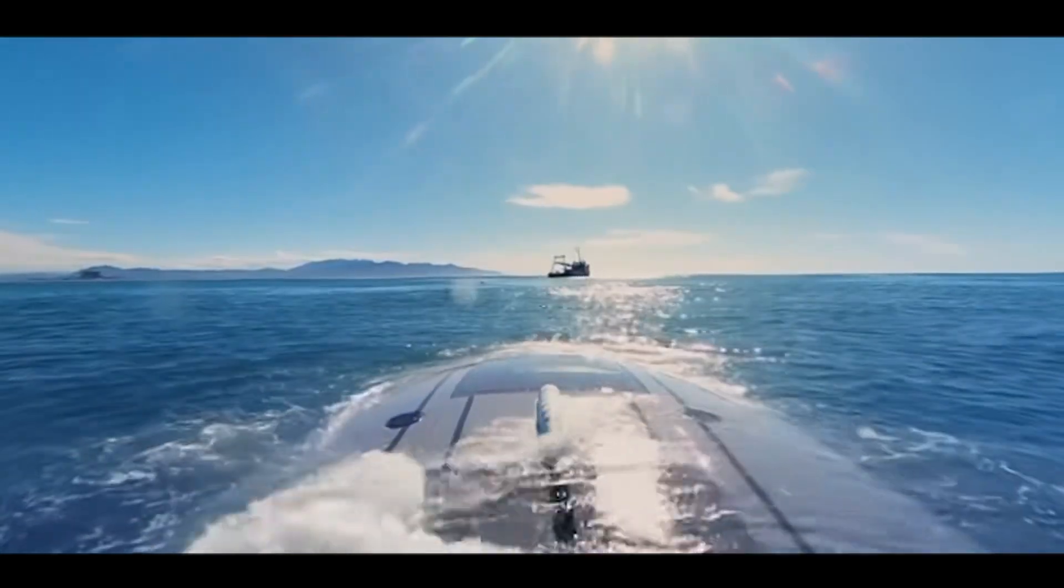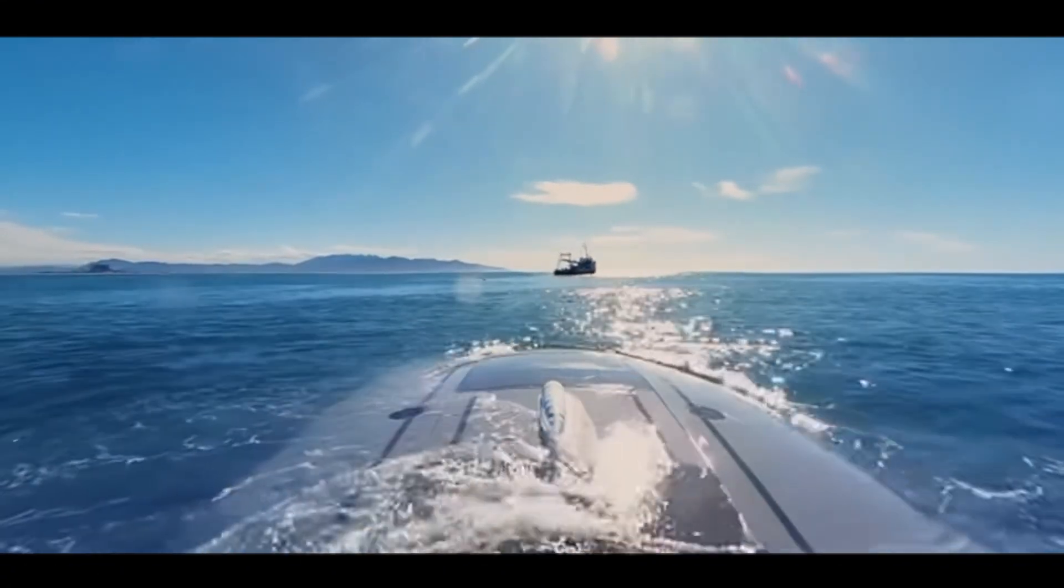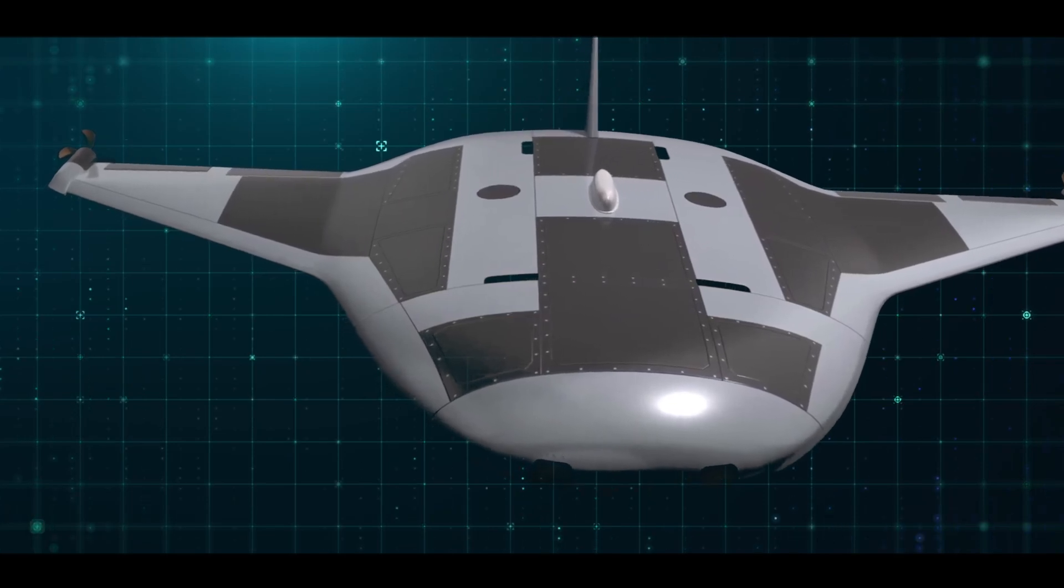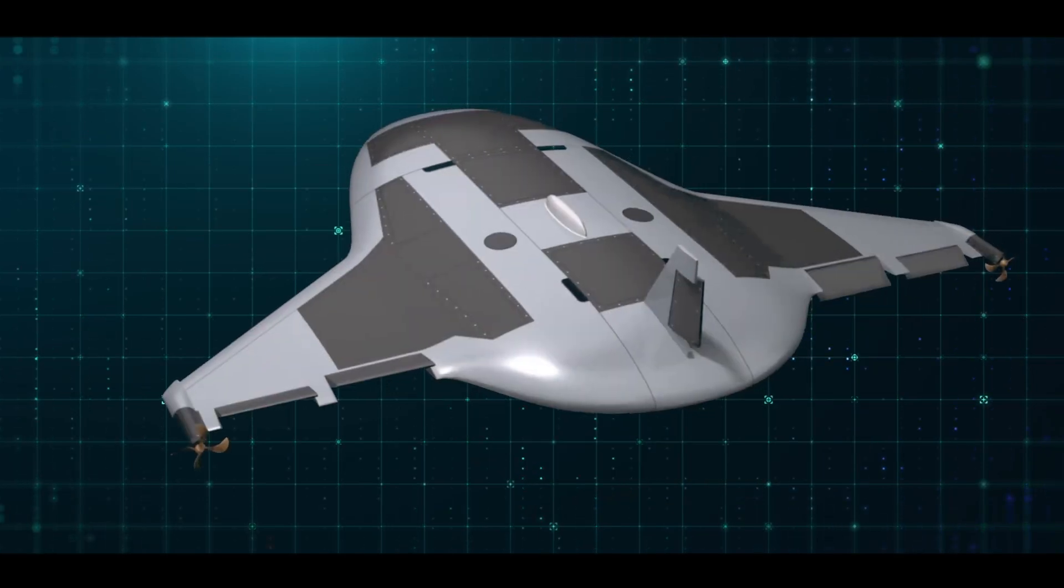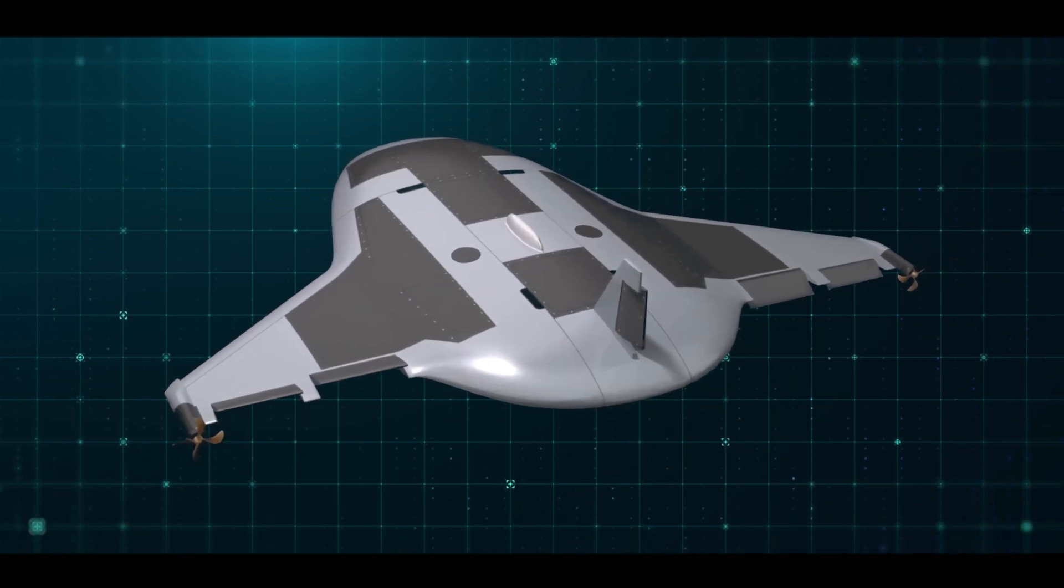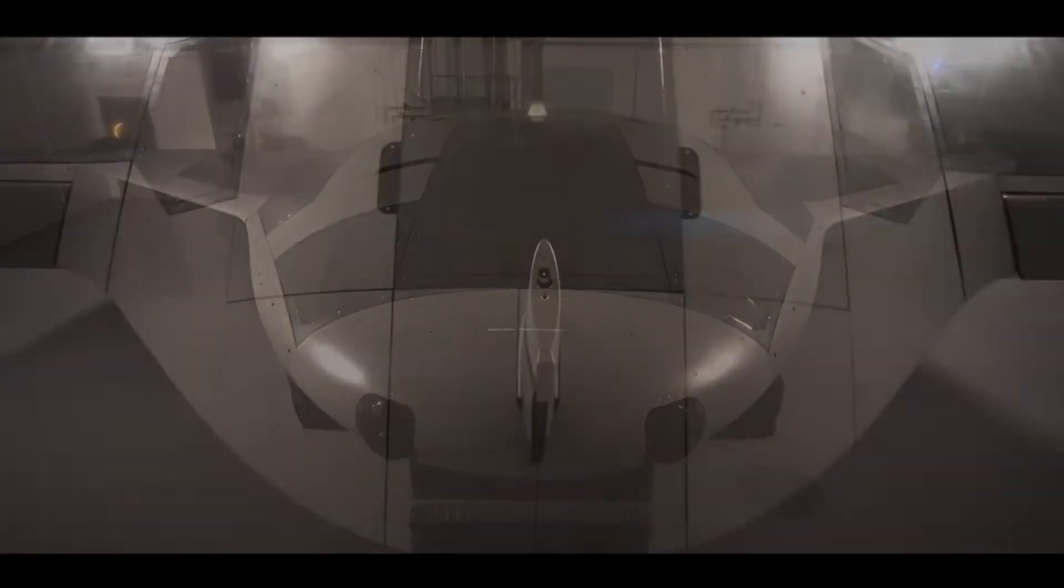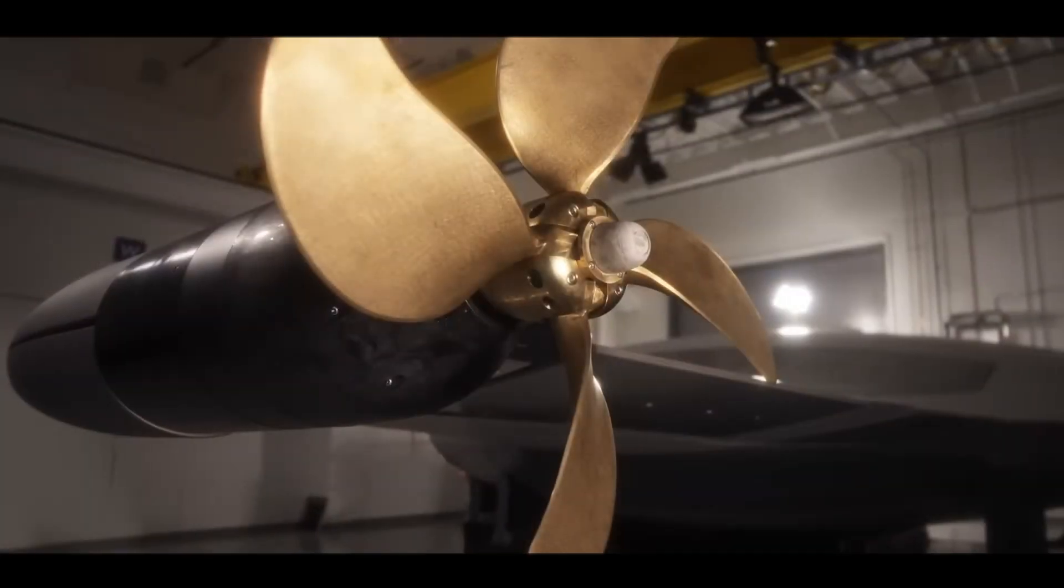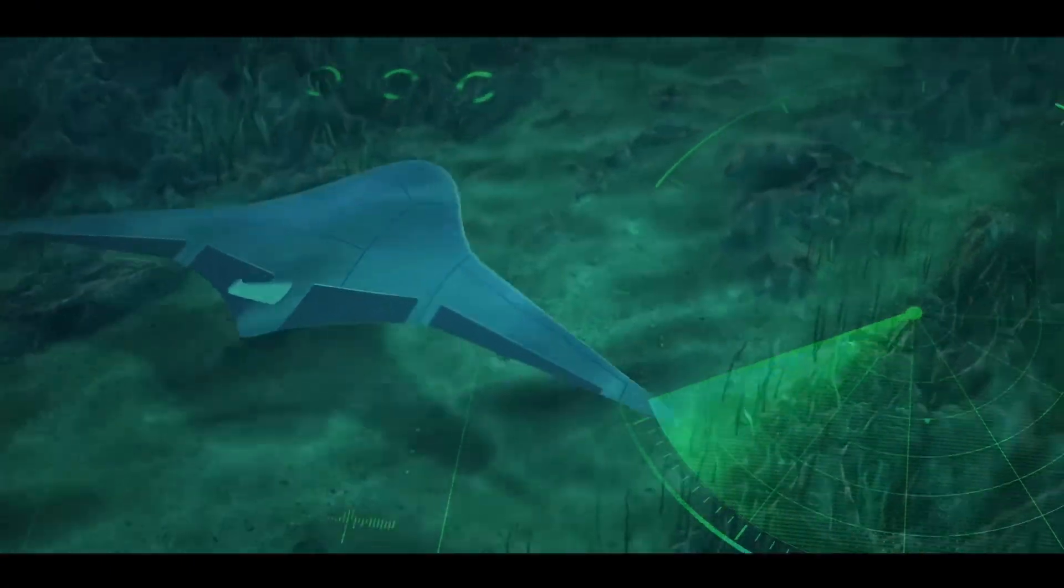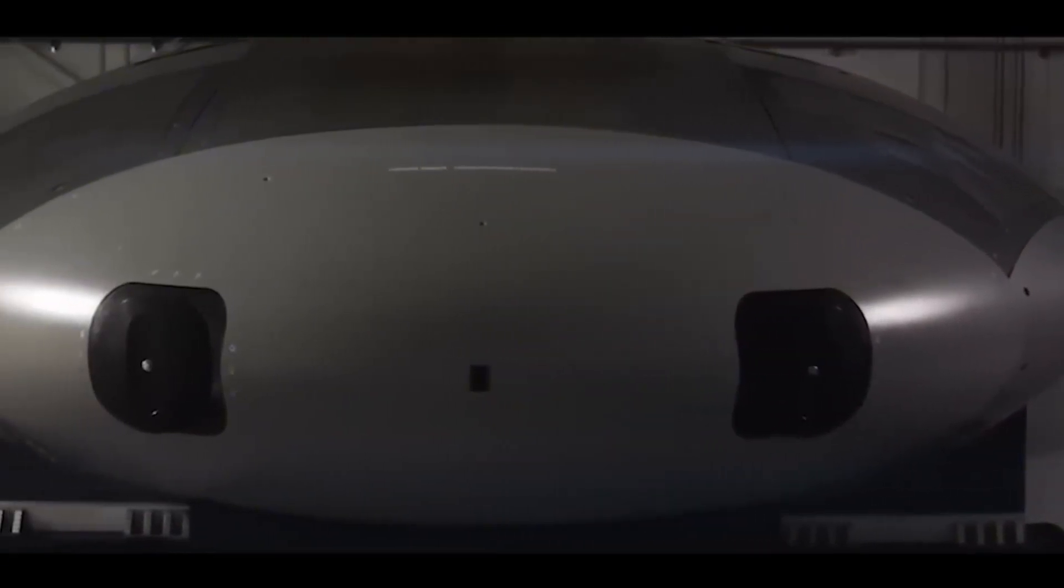Beyond energy concerns, the manta ray must overcome the challenges of operating in extreme underwater conditions. Structural integrity is paramount, as the drone must withstand immense pressure at great depths and resist corrosion caused by prolonged exposure to saltwater. Engineers have addressed these challenges by developing advanced materials and coatings that ensure durability while maintaining the drone's stealth capabilities. These materials allow the manta ray to perform reliably in some of the harshest environments on Earth.